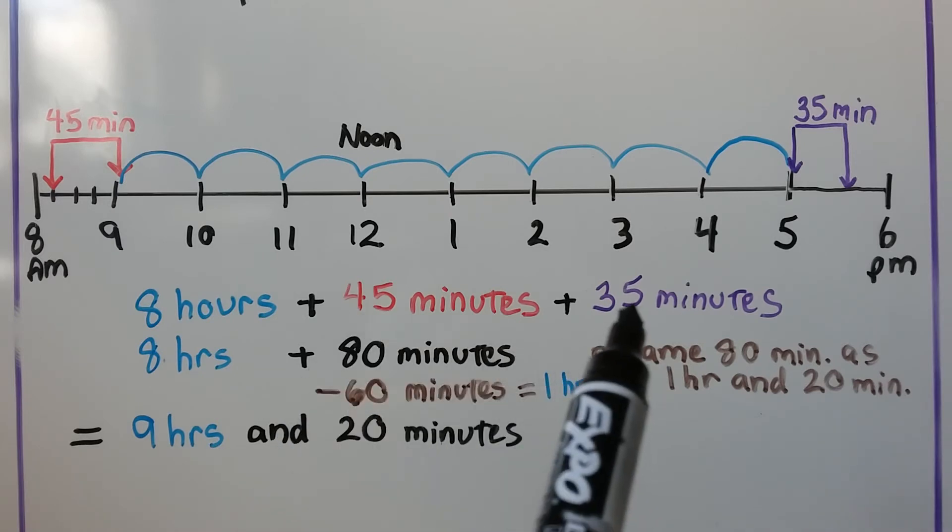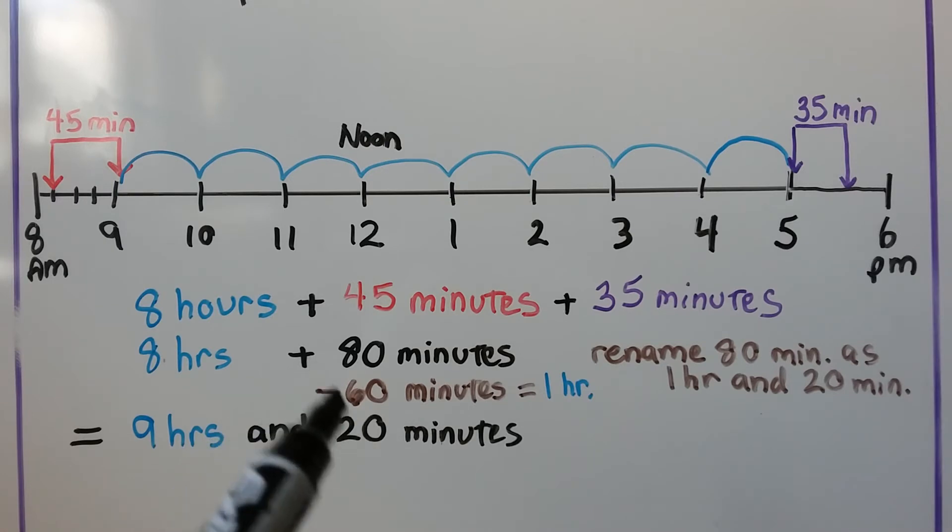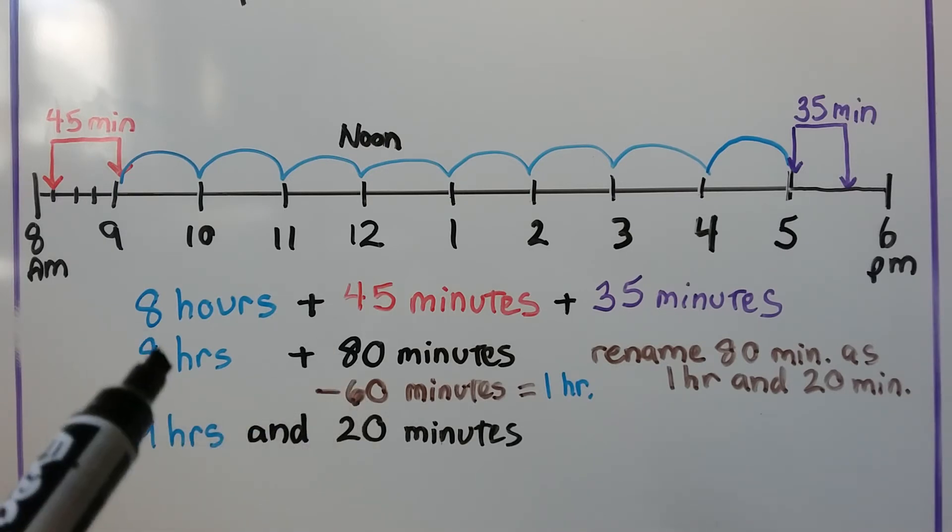So we can add the 45 and the 35 and get 80 minutes. And we can rename this 80 as 1 hour and 20 minutes because there's 60 minutes in an hour. We take 60 from here, we give it to here. So now there's 9 hours and that leaves 20 minutes on this side. It's 9 hours and 20 minutes.